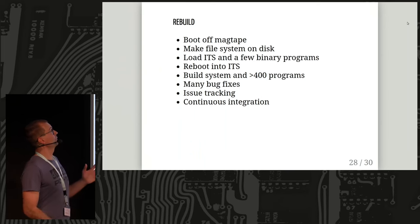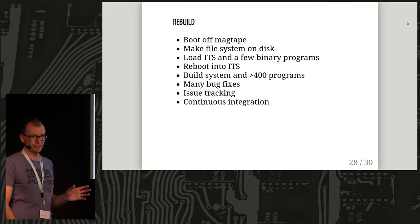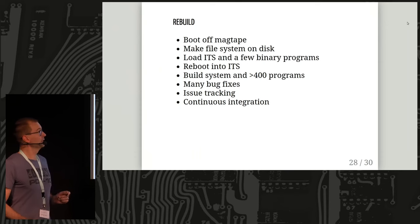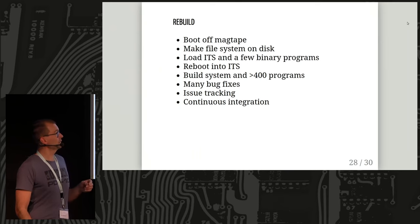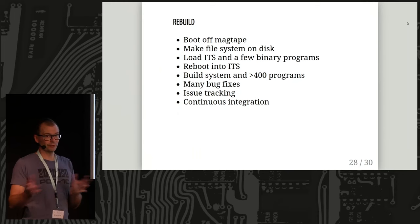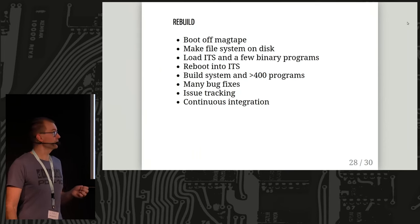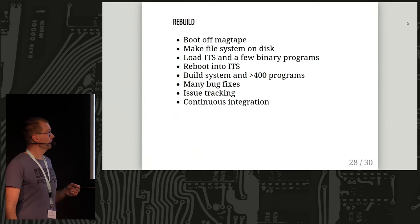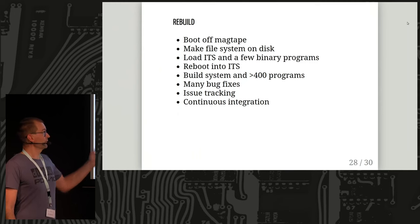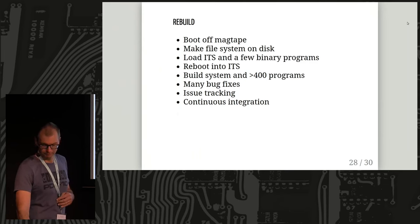The build script works by making a virtual magnetic tape with bootstrap programs to create a file system on a disk, then copies the ITS kernel and assemblers onto that disk. A script then builds over 400 programs, which takes one or two hours — it would have taken weeks on the real machine, if they ever did it all at once. We've added many bug fixes and updates, and the GitHub project has issue tracking and continuous integration — modern development facilities.